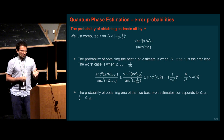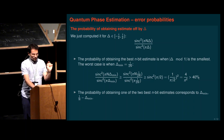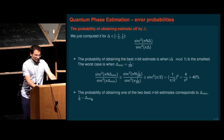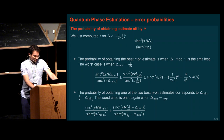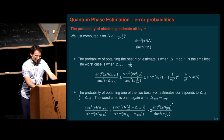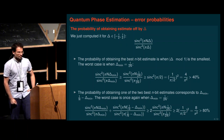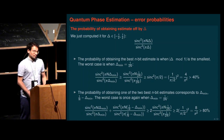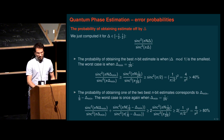The probability of obtaining one of the best two n-bit estimates is when we consider both the closest point at delta and the other side at 1/N minus delta. The worst case is when the true phase falls exactly between two mesh points, giving a lower bound of 8 over pi squared, which is at least 80%. So with at least 80% probability we get one of the best two estimates in binary. The annoying part is that we still get some bad estimates with non-negligible probability.